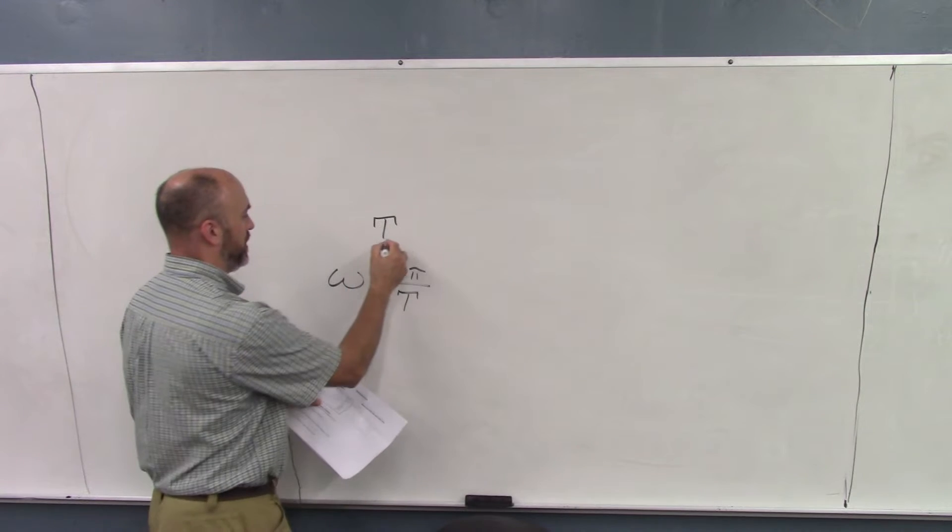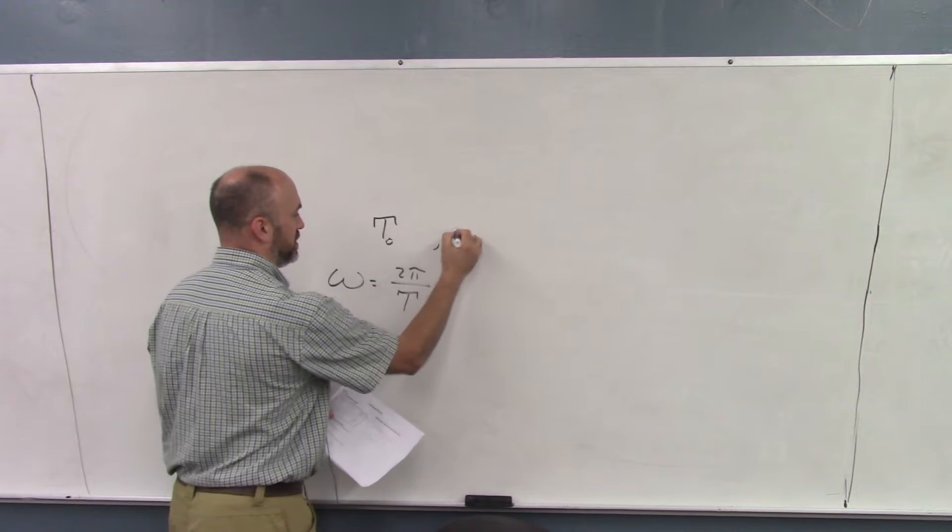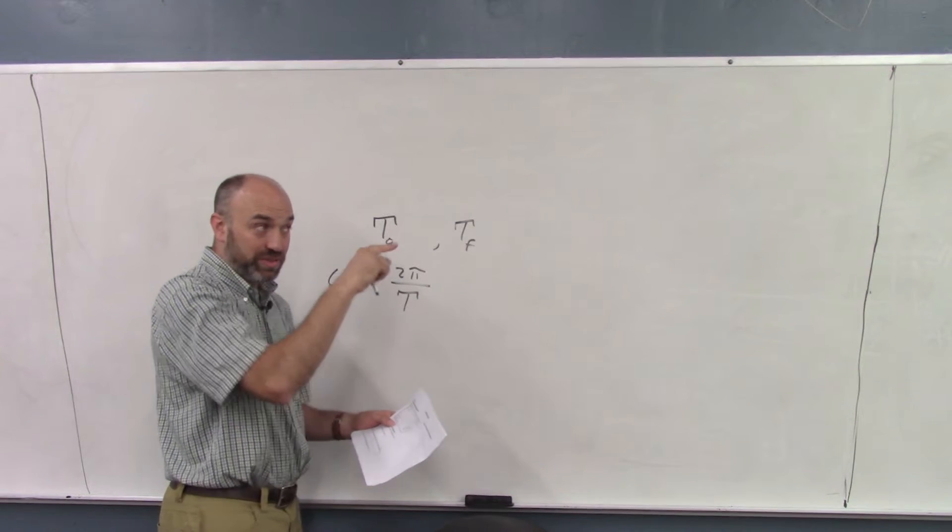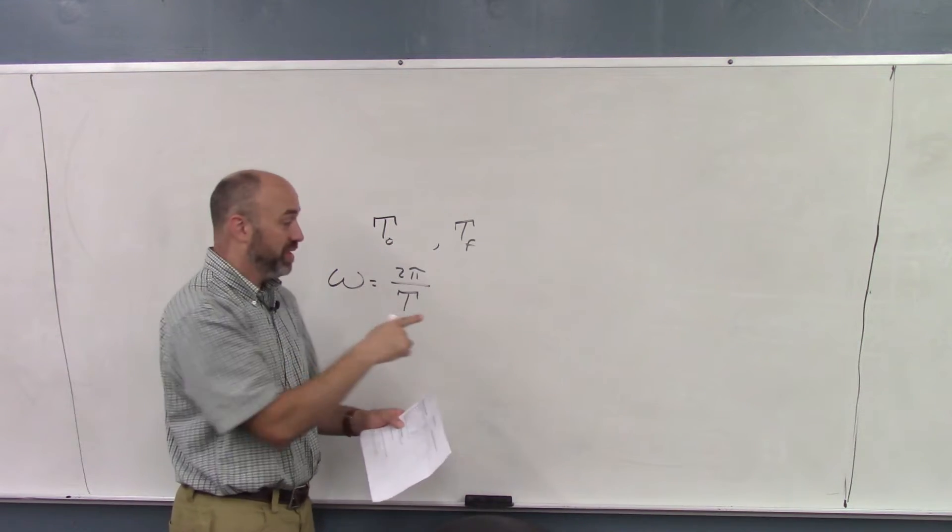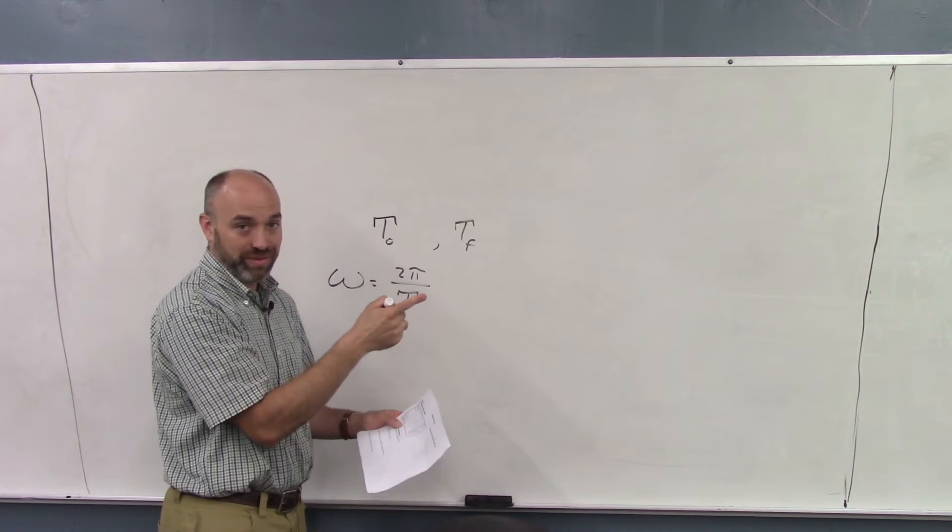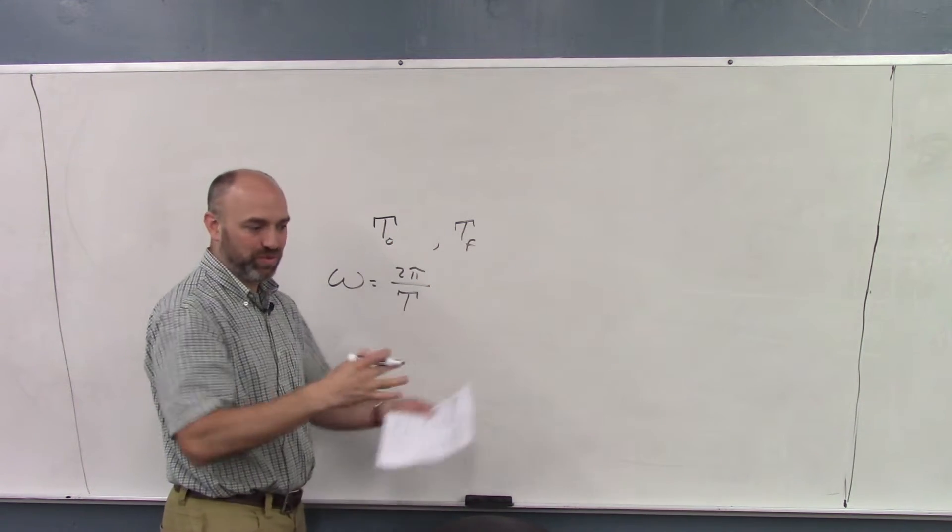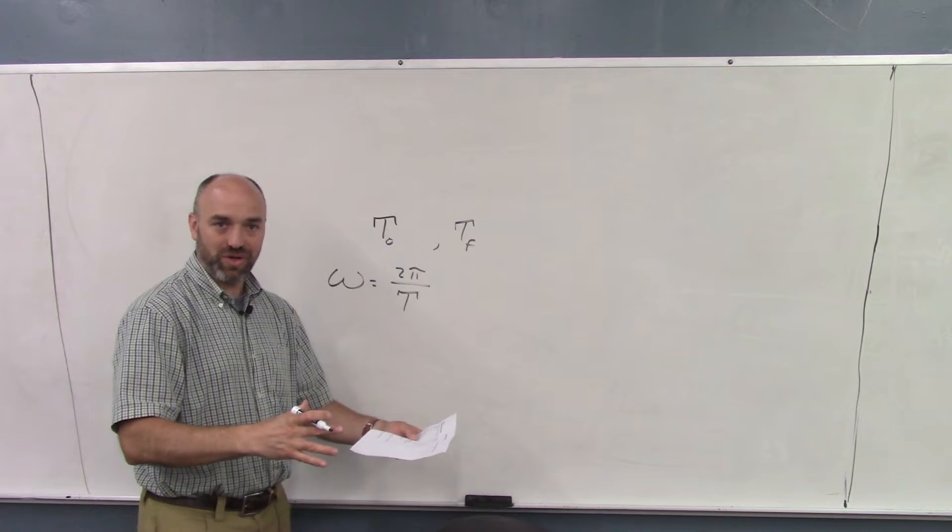So you have Tau initial and Tau final. That's period, the initial, the time to go around initially, and then the time to go around finally before and after the collision. So that was when we dropped the disk on it, right? Yeah.